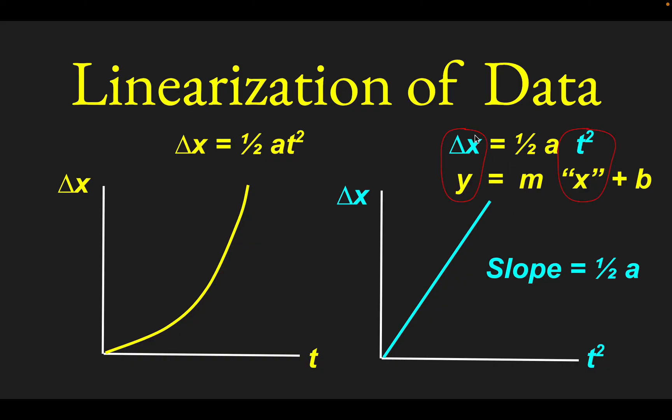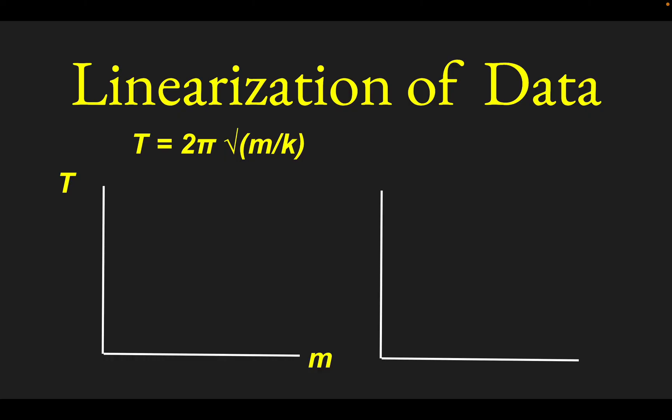So this all works because you're letting delta x play the role of y on the graph, and you're letting t squared play the role of x, or the horizontal axis variable on the graph. Another common context for this, in physics anyway, in introductory physics, is if you look at a mass on a spring. And one might do an experiment where somebody might change how much mass they hang from a spring, and then they would measure how that affects the period of oscillation, the time to go back and forth.